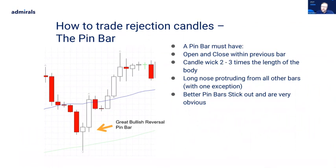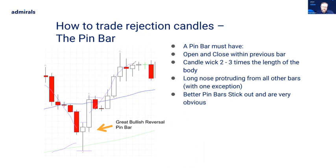A good pin bar should have the open and close within the range of the previous bar — in this particular case, within the body, which is even better. The candle wick should be two to three times the length of the body, with a long nose protruding from all the other bars. The better bars will stick out and are very obvious. In that example, price was in a pullback back to a moving average, printed a really clear bullish reversal pin bar, which then became a morning star formation before price rallied strongly upward.